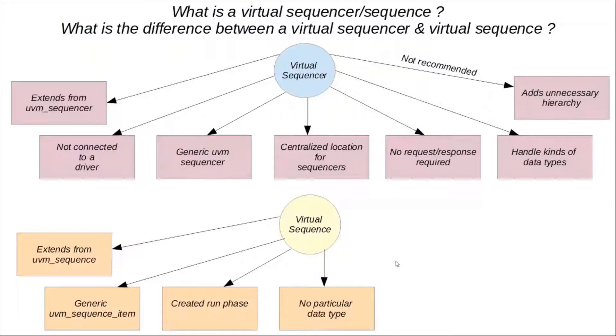So it gets created during the run phase of a UVM test. It's again not associated with any particular type of data type, and this is sort of like—you can also consider this as a top-level collection of sequences.